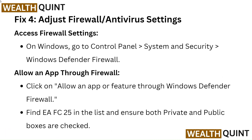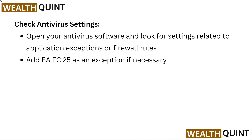Fix 4: Adjust Firewall or Antivirus settings. On Windows, go to Control Panel, then System and Security, then Windows Defender Firewall. Click on Allow an App or Feature through Windows Defender Firewall, find EA FC25 in the list, and ensure both private and public boxes are checked. Also open your antivirus software, look for settings related to application exceptions or firewall rules, and add EA FC25 as an exception if necessary.